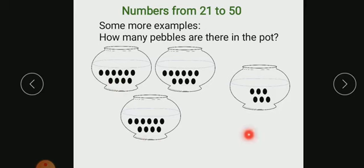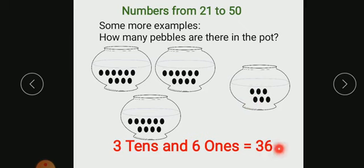And you have 1, 2, 3, 4, 5, 6 more pebbles. So it becomes 36. That's 3 tens—here 1, 2, 3 tens—and 6 ones. It becomes 36.